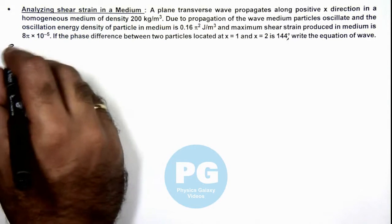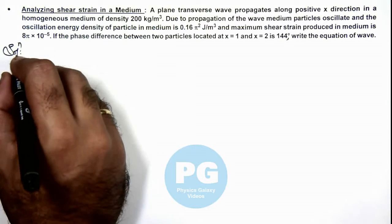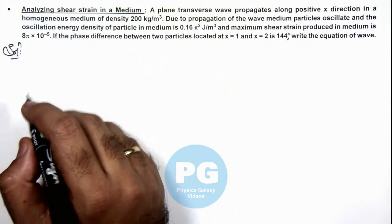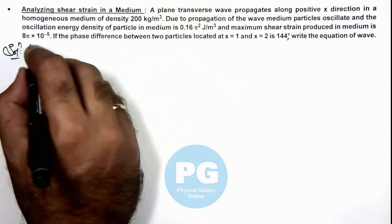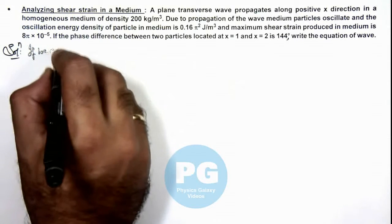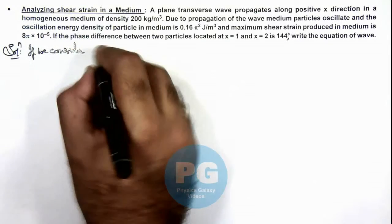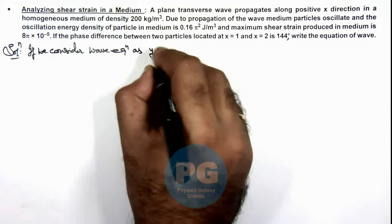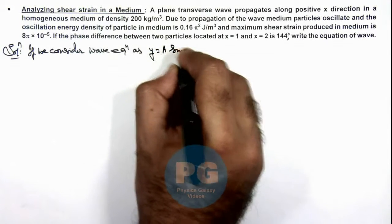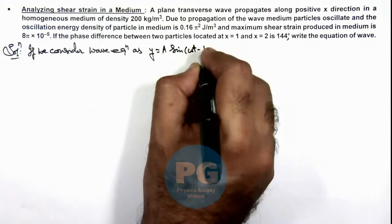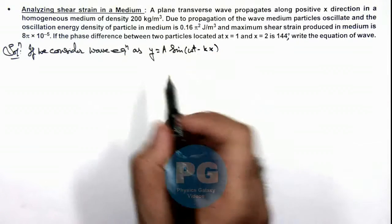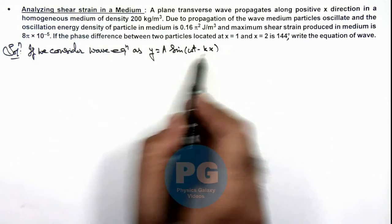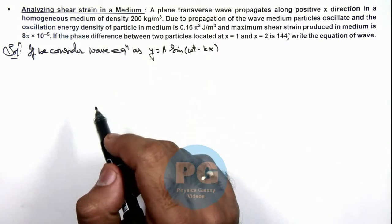So here, in solution one by one, we analyze all these terms which are given in the problem. If we consider wave equation as y = ay sin(ωt - kx), here we need to calculate the value of ay, omega, as well as k, that means the basic wave parameters we need to calculate.